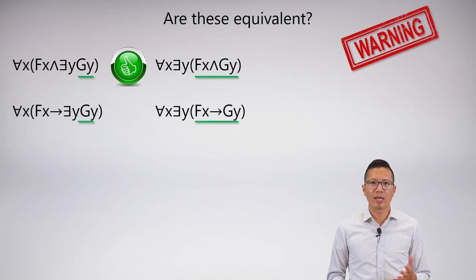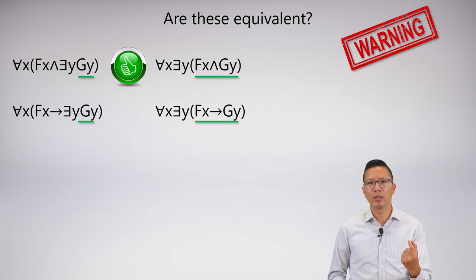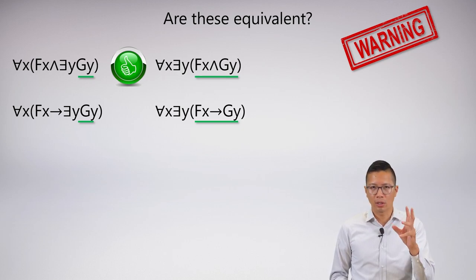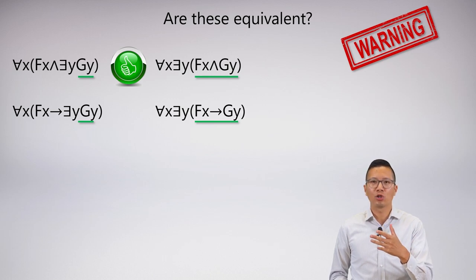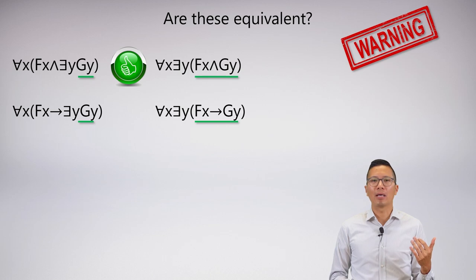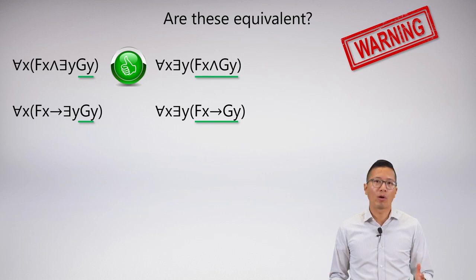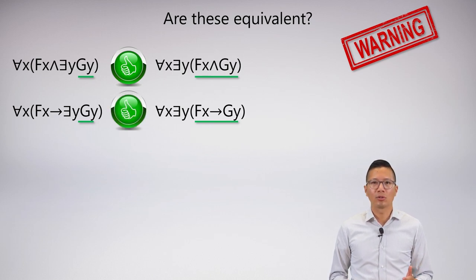And here's another example. So here the example is the same. I start off with a small scope on the existential, it's just the g in the consequent. And then I change that, I pull the existential out to the front, and I make the scope of the existential the entire conditional statement. I haven't switched the order of the quantifiers. Are these equivalent? The answer is yes.